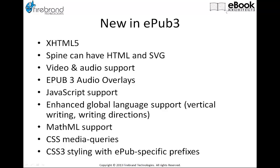The spine can now have HTML files and also SVG files, which means you can have a full-page vector-based graphic directly on the spine of the book without wrapping it inside an HTML file. EPUB 3 also has video and audio support built into the standard — that doesn't mean it will be supported across every device, but it is supported inside the standard itself, which wasn't the case in EPUB 2.